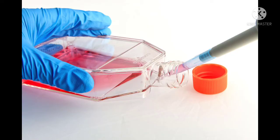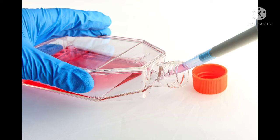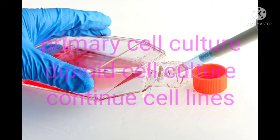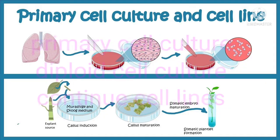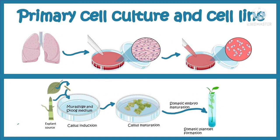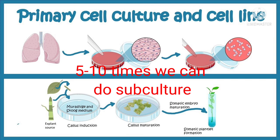Explant culture: fragments of minced tissue can be grown as explants, which was originally known as tissue culture, but this method is rarely done nowadays. Cell culture is the type routinely employed for diagnostic virology. Cell cultures are classified into three types: primary cell culture, diploid cell strains, and continuous cell lines. Primary cell cultures have a capability of very limited growth, perhaps five to ten divisions at most.